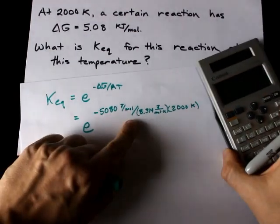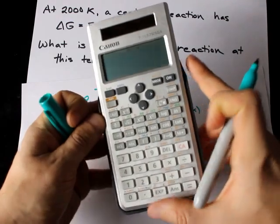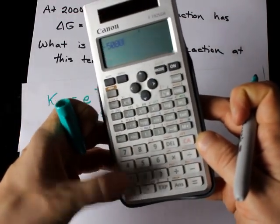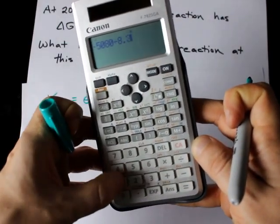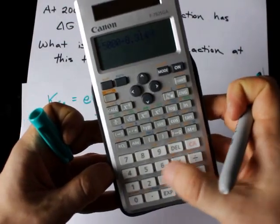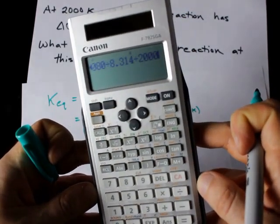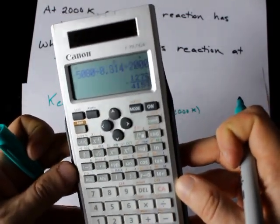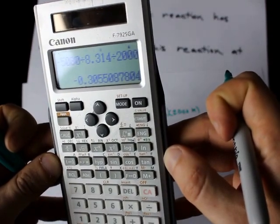Let's do this on the calculator. That's negative 5080 divided by 8.314 and also again divided by 2000 — that's how I put both those things in the denominator on my calculator at least. I end up with negative 0.3055.